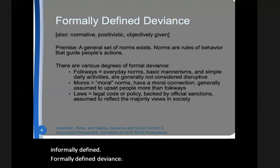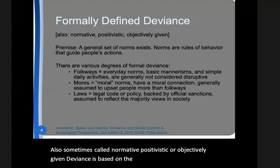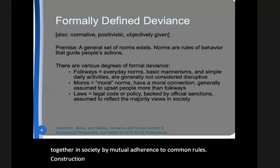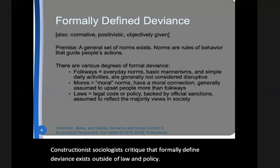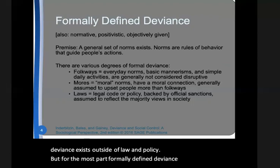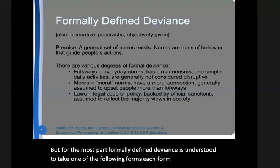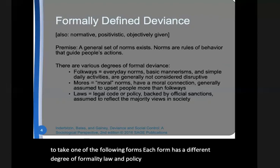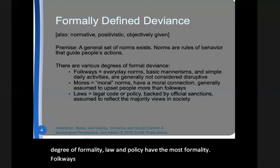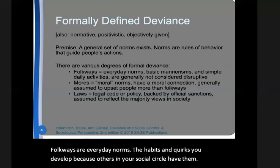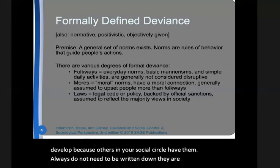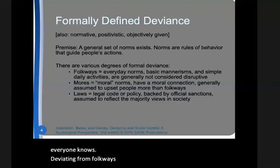Formally defined deviance, also sometimes called normative, positivistic, or objectively given deviance, is based on the idea that people operate together in society by mutual adherence to common rules. Constructionist sociologists critique that formally defined deviance exists outside of law and policy, but for the most part, formally defined deviance is understood to take one of the following forms, each with a different degree of formality. Law and policy have the most formality. Folkways are everyday norms — the habits and quirks you develop because others in your social circle have them. Folkways do not need to be written down; they are the things everyone knows. Deviating from folkways is not generally considered disruptive.